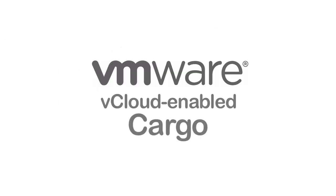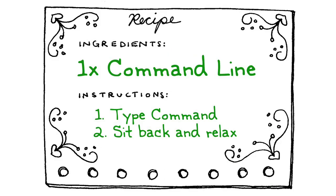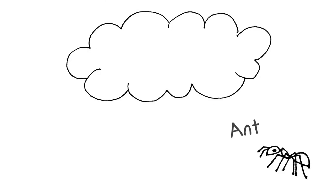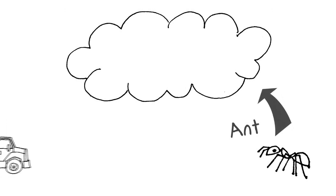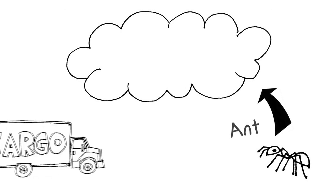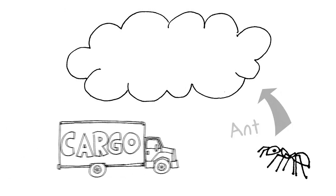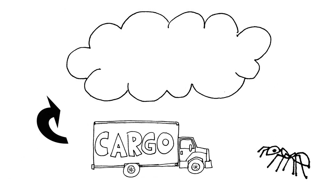vCloud-enabled Cargo changes all of this. All you need is a single-line command. Ant automatically provisions a vApp in the cloud. Then Cargo picks up, instantiating the target platform and deploying your code.